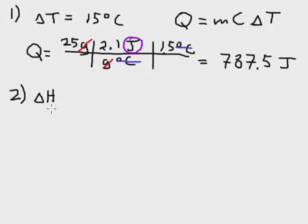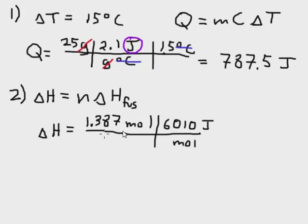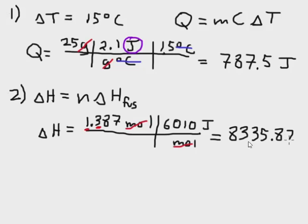In step two we calculate the energy required to fully melt the ice, converting it from all solid to all liquid. We use moles times the delta H of fusion: 1.387 moles times 6,010 joules per mole. Moles cancels with moles, and we calculate that we need 8,335.87 joules to fully melt all that ice into liquid water.